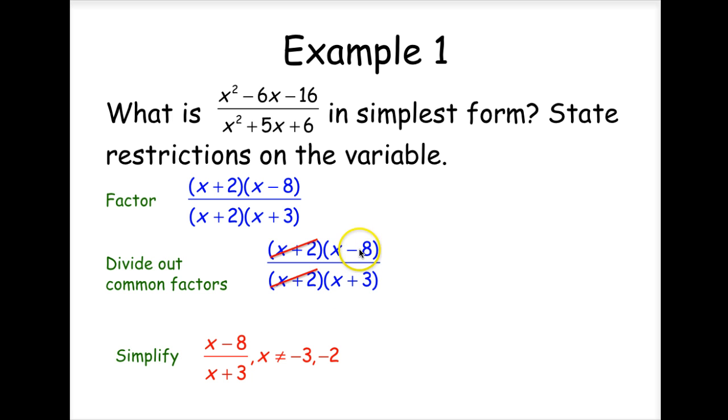So when we simplify, we have x minus 8 over x plus 3, but the restrictions deal on our original factoring before we crossed out. So x cannot be a negative 2 or a negative 3.